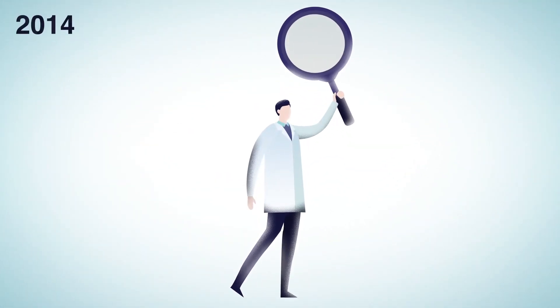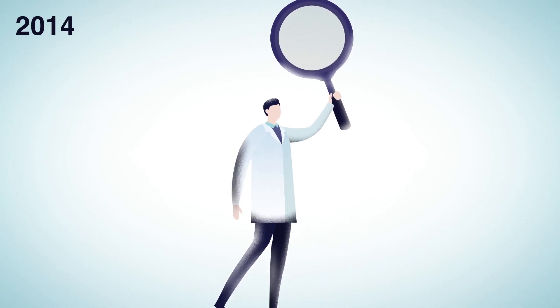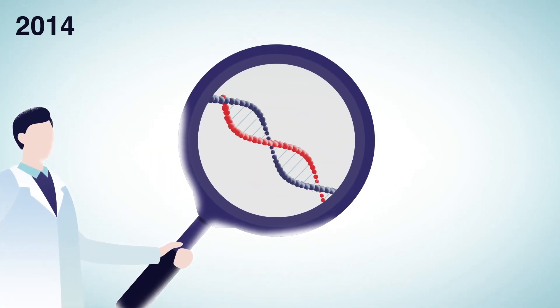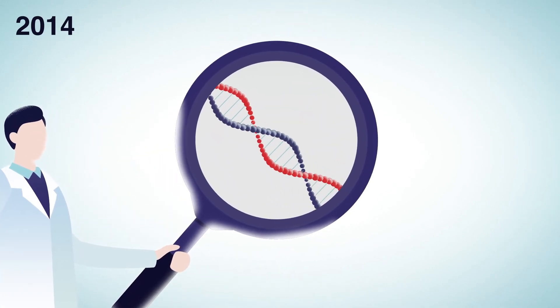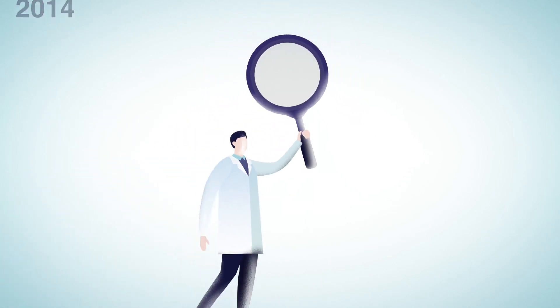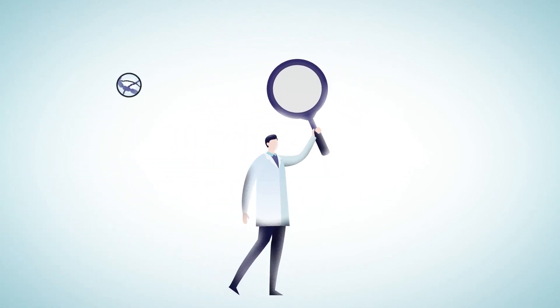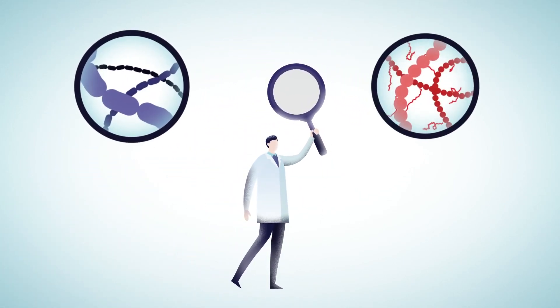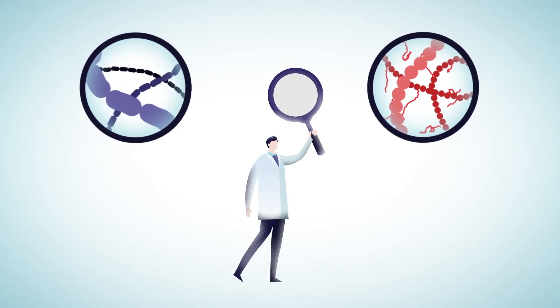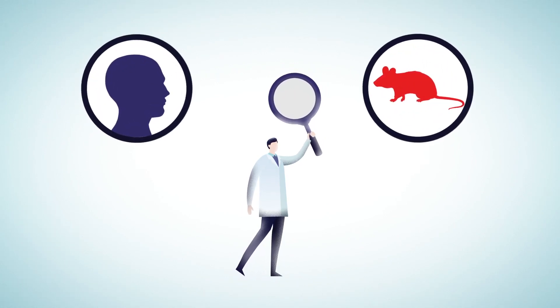In 2014, Feng Zhang was the first researcher to successfully adapt CRISPR-Cas9 for genome editing in eukaryotic cells. He engineered two different Cas9 orthologues from S. thermophilus and S. pyogenes and performed targeted genome cleavage in human and mouse cells.